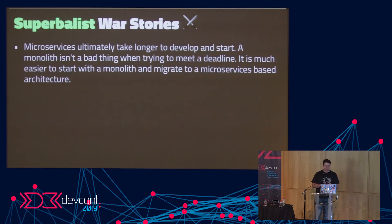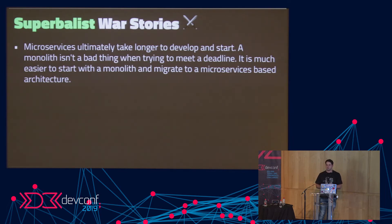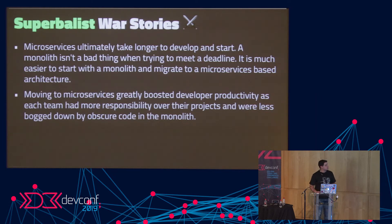Microservices ultimately take longer to develop and start. I think if you're starting a new project and don't intimately know the domain, starting with microservices is kind of a bad idea — if you model one or two of them wrong, you'll have to change in two places instead of one. So it's generally quite cool to start with a monolith and then split it out. Moving to microservices greatly boosted our developer productivity because different teams could be responsible for different projects and microservices instead of one big monolith.